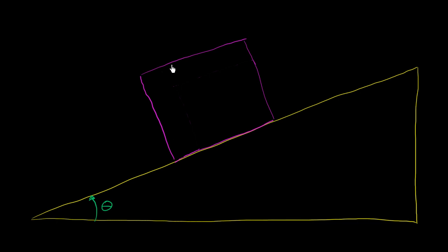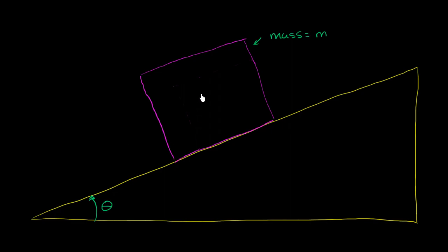Let's say I have some type of a block here, and this block has a mass of m. It's sitting on an inclined plane, or a ramp, or some type of wedge. We want to think about what might happen to this block and the different forces that might keep it in place or not. If this whole setup is near the surface of the Earth, there will be the force of gravity trying to attract this mass towards the center of the Earth and vice versa.